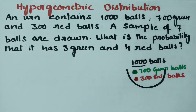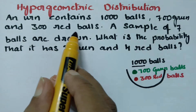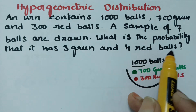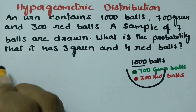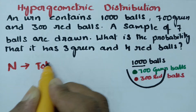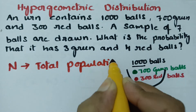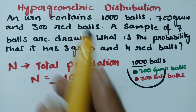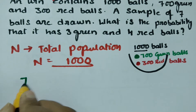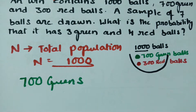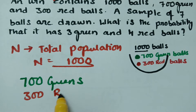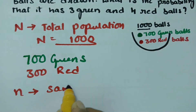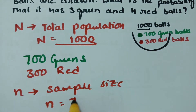Using the hypergeometric distribution, I'm going to solve this problem: An urn consists of 1000 balls — 700 green and 300 red. A sample of seven balls is drawn. What is the probability that it has three green and four red balls? The total population N is 1000, and the sample size n equals 7.